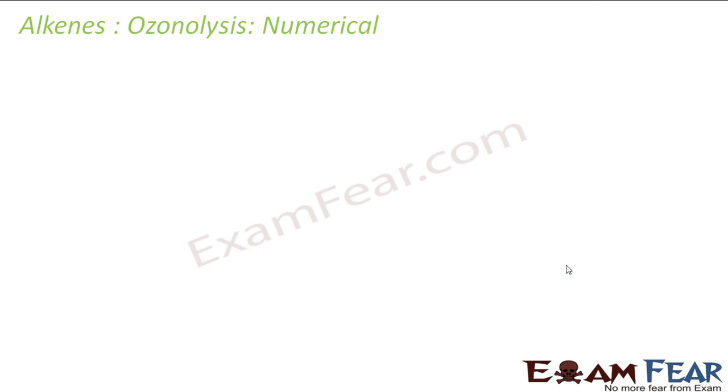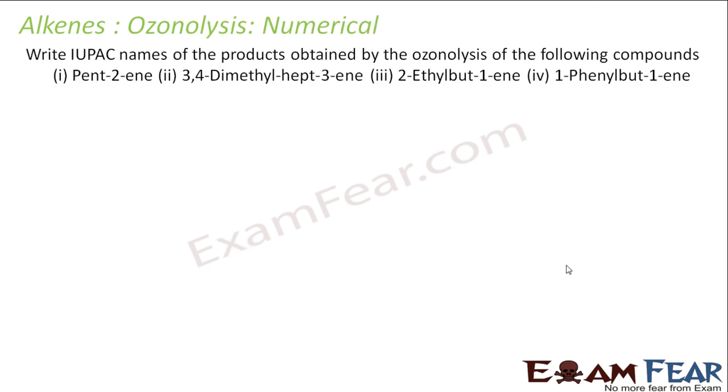Let's take some numerical on this. We have to write the IUPAC name of the product obtained by ozonolysis of the following compound. First, pent-2-ene. If you draw pent-2-ene: one, two, three, four, five, and at second I have double bond.